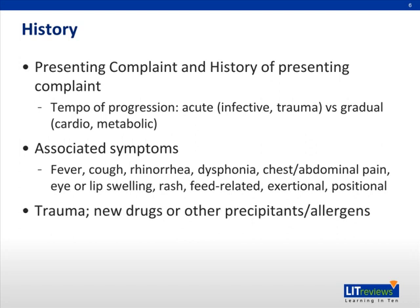Recent trauma can cause potentially life-threatening tension pneumothorax, hemothorax, or flail chest. One should also check if there had been any exposure to new drugs, foods, and other precipitants or allergens such as weather changes and animals in cases with acute respiratory distress.